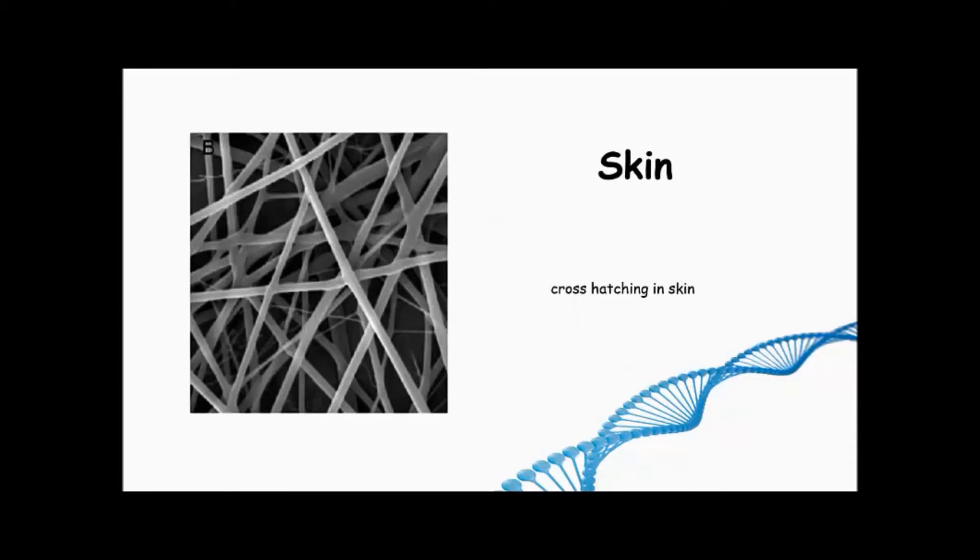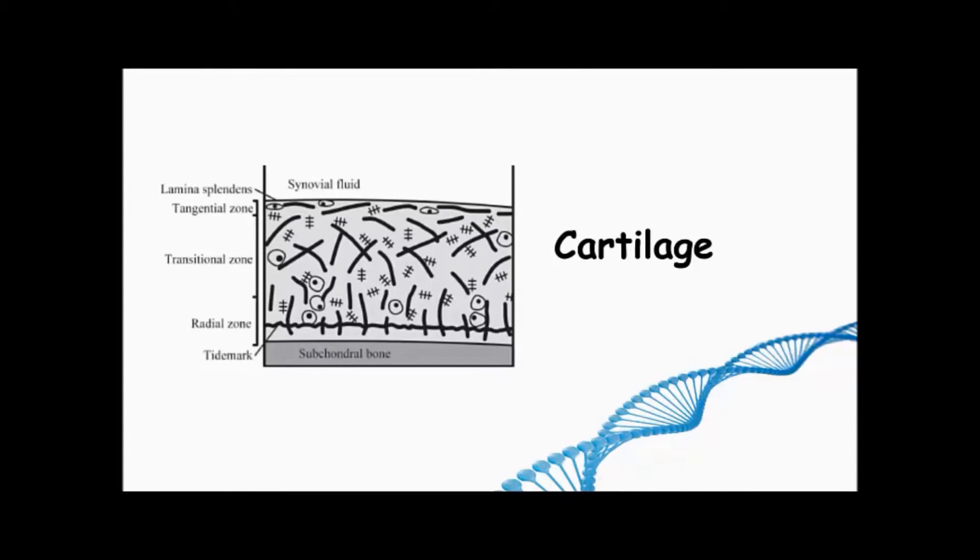Loading that can be applied in all directions is known as isometric. This is common in skin and cartilage which protects from any direction that a force is applied.